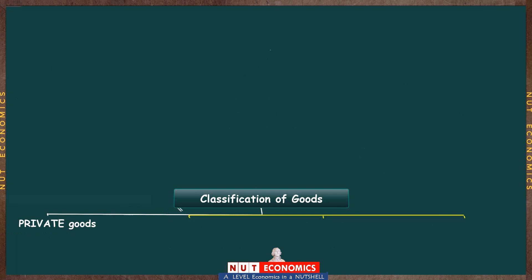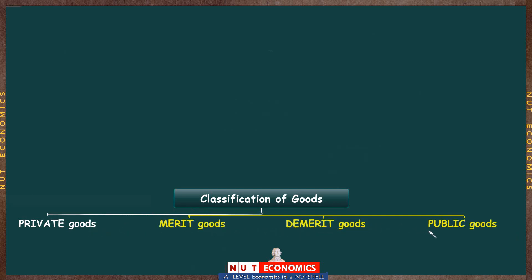In this last section we are now going to talk about four different types of goods. We are going to learn what are private goods, merit goods, demerit goods, and public goods.